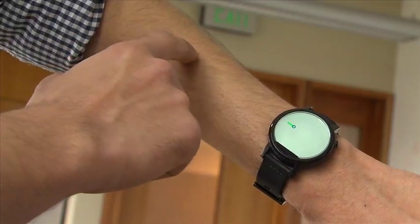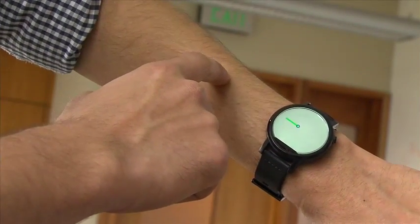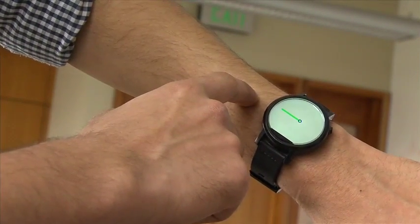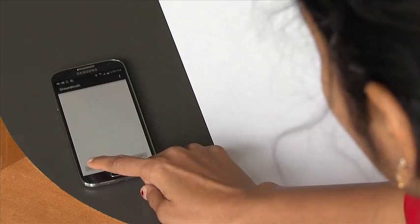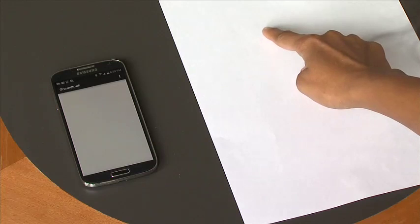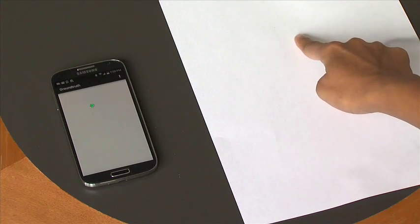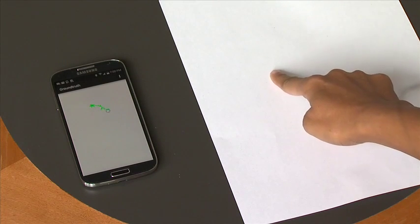We present FingerIO, a system that transforms the space around existing smartphones and smartwatches into interactive surfaces. FingerIO can accurately track the location of a finger around an off-the-shelf smartphone or smartwatch with only 8mm margin of error.